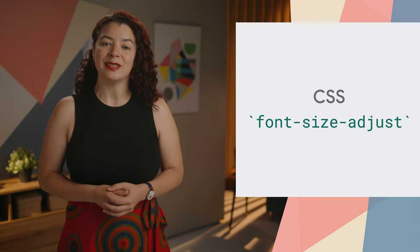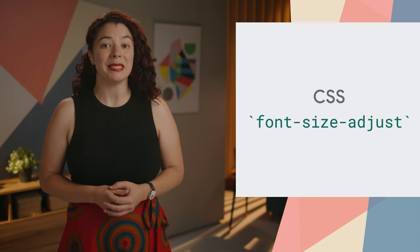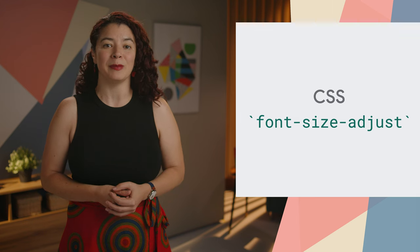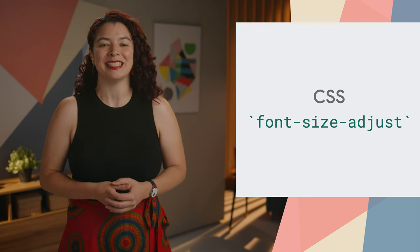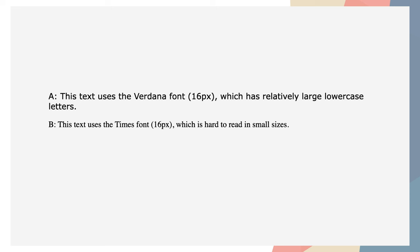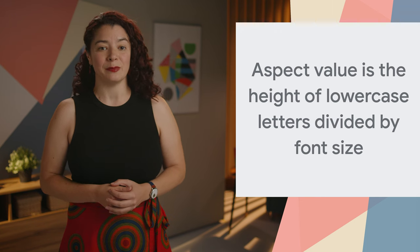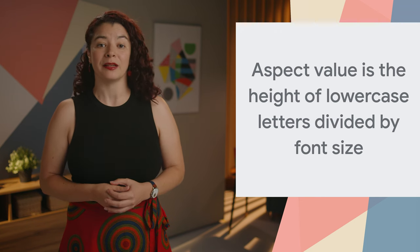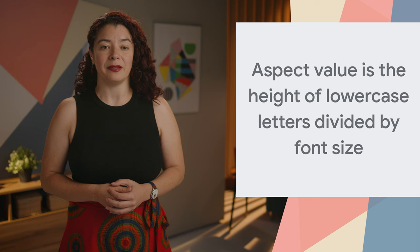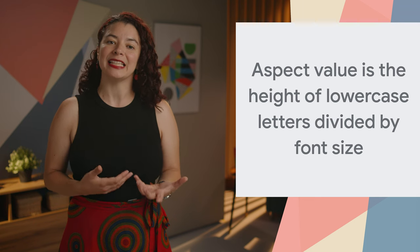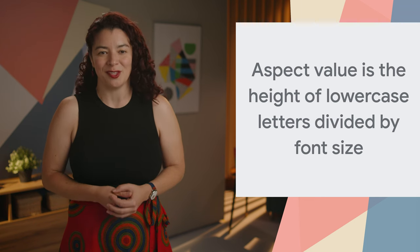Your site's legibility can decrease when the first choice font family is unavailable and its fallback font has a significantly different aspect value. On the screen, you can see the difference between the Verdana and Times font, even though the text is the same size. If your site were to fall back to the Times font, it becomes a lot harder to read. The Font Size Adjust CSS property helps you adjust the font size of fallback fonts to keep the aspect value consistent.